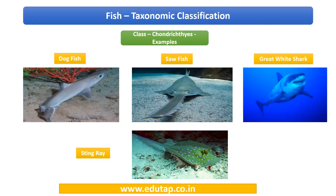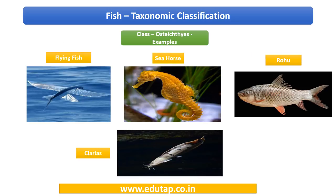Let us look at pictures of the examples. Under Chondrichthyes, the examples are dogfish, sawfish, great white shark, and stingray. Examples of Osteichthyes include flying fish, seahorse, rohu, and Clarias.